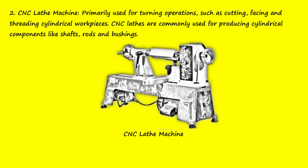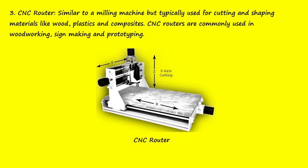2. CNC Lathe Machine — primarily used for turning operations such as cutting, facing, and threading cylindrical workpieces. CNC lathes are commonly used for producing cylindrical components like shafts, rods, and bushings.